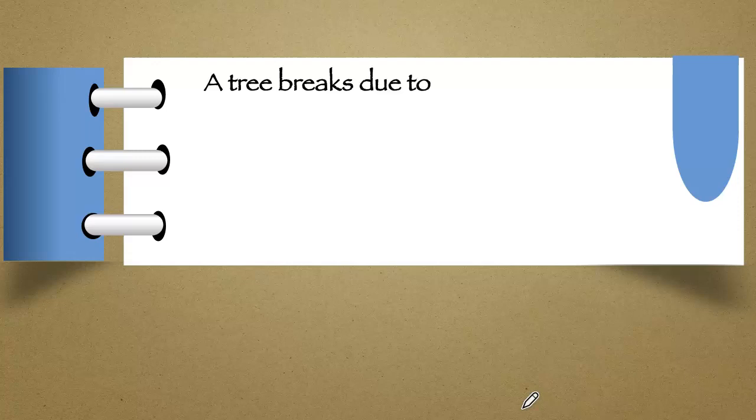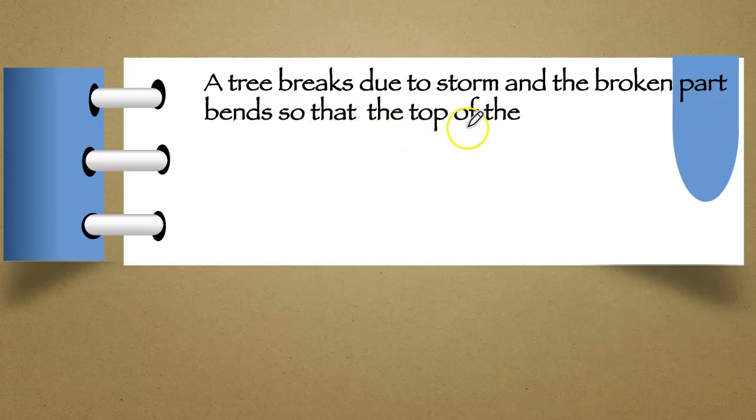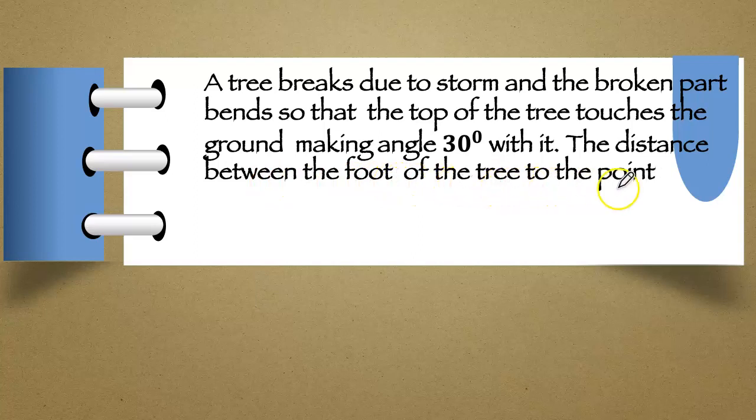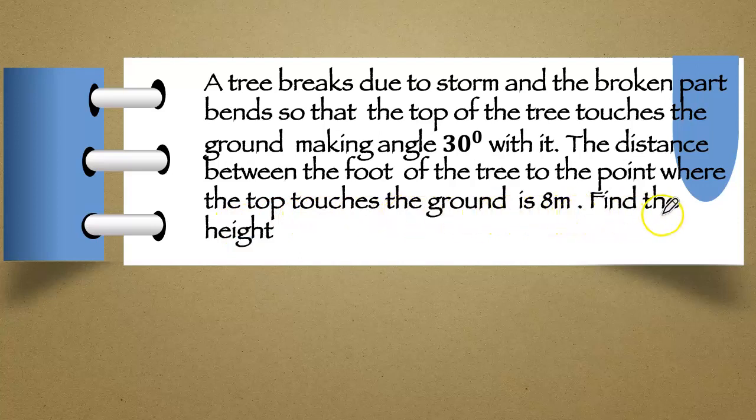Let us see the question. A tree breaks due to storm and the broken part bends so that the top of the tree touches the ground making angle 30 degree with it. The distance between the foot of the tree to the point where the top touches the ground is 8 meter. Find the height of the tree.